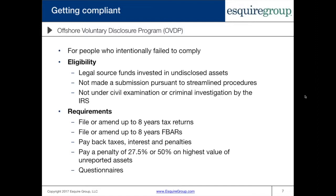The procedure to participate in the OVDP is quite lengthy and expensive. You need to file or amend up to eight years of tax returns, correcting them to include all unreported income and omitted informational returns. The second requirement is filing or amending up to eight years of FBARs for all bank accounts in which you have financial interest or signatory authority. Additionally, you need to pay all back taxes, interest, and penalties — which can add up quickly going back eight years.